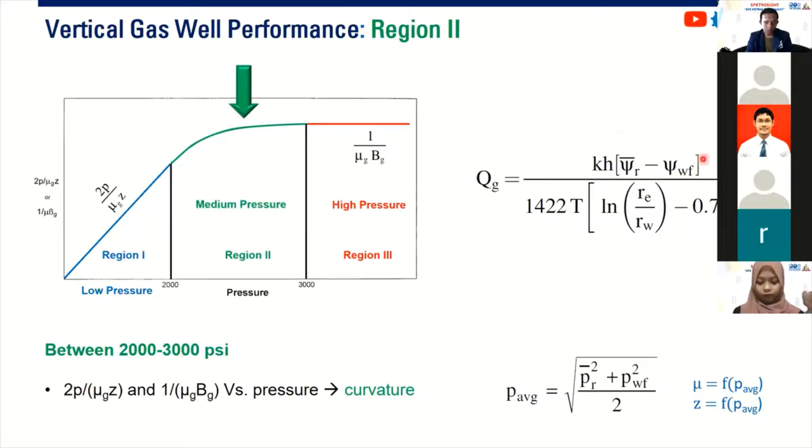We have to use pseudo pressure. If your well is operating between 2000 and 3000 PSI, unfortunately you have to use or you have to calculate the pseudo pressure. But most softwares, most commercial softwares can easily convert your pressure to be pseudo pressure. So it's not that big problem actually. It will be challenging if you use spreadsheet or Excel because you need to do the integration there. But if you use commercial software, it's easy. It can be converted right away. So between 2000 and 3000, if you want to calculate your gas flow rate, you have to use this formula.